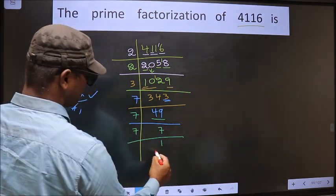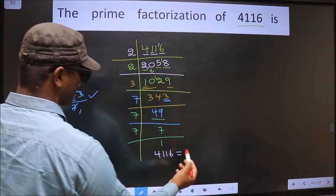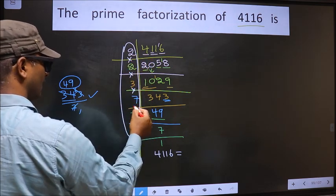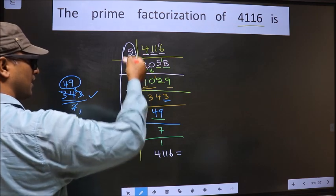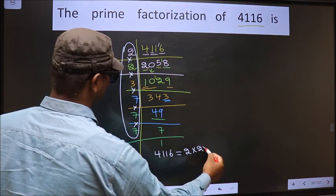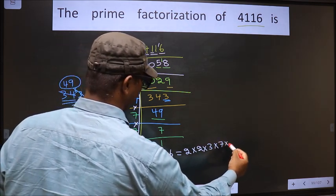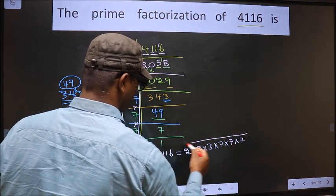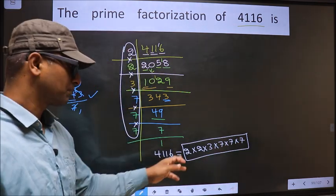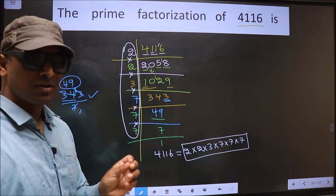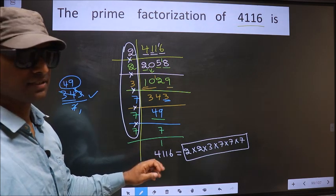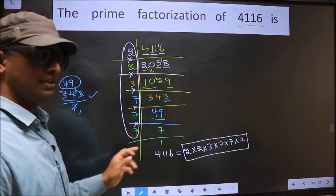So the prime factorization of 4116 is the product of these numbers: 2 into 2 into 3 into 7 into 7 into 7 into 7. This is the prime factorization of 4116, also called the product of prime numbers of 4116. Am I clear?